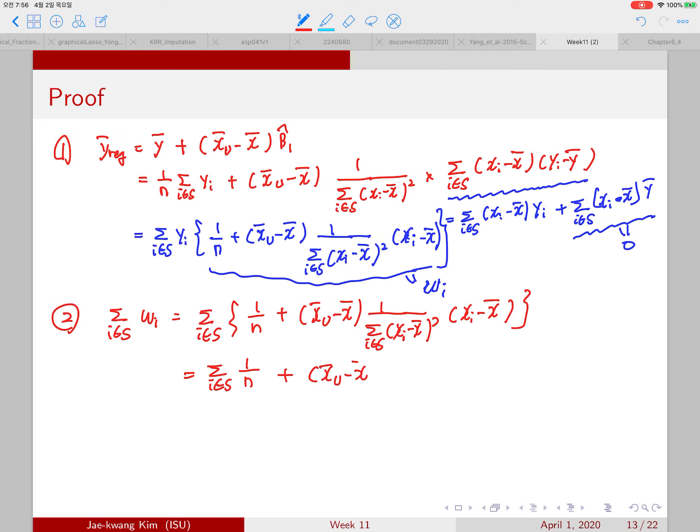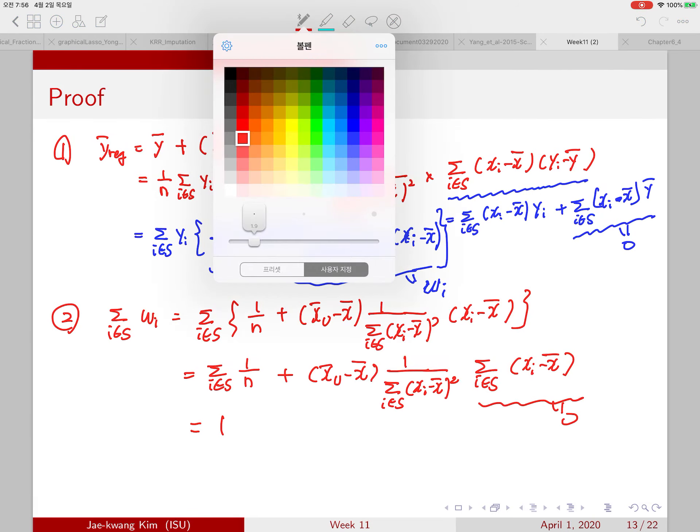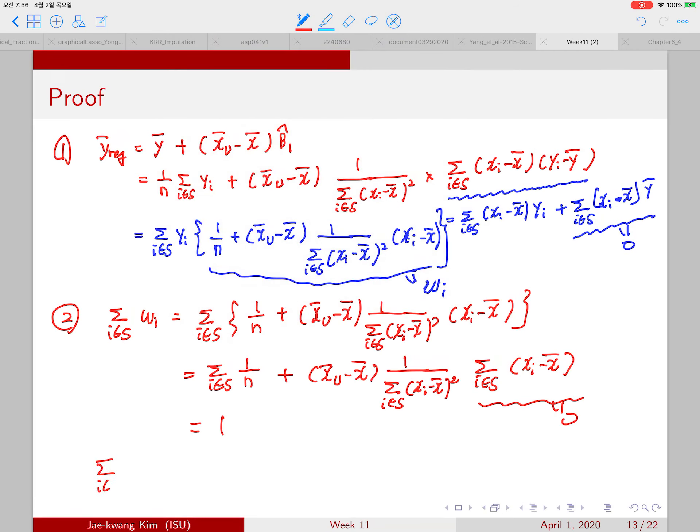So summation can actually go inside to here, and then this one is zero, so that becomes one. Now, what if we apply the second term, xi, then you can see that one over n xi, and then the summation can go all the way to the last term.